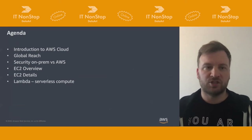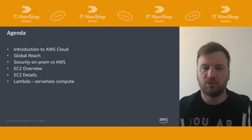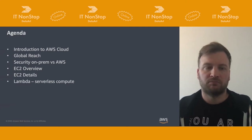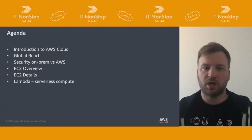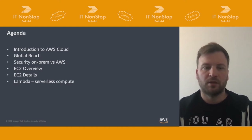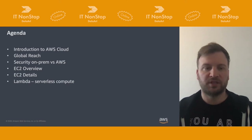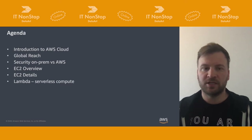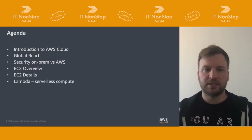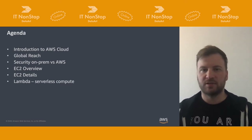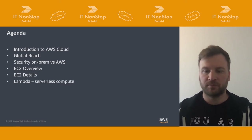Today's agenda will cover what is AWS Cloud overall, what it means from a global reach perspective, how we create our infrastructure globally, what it means from a security perspective and comparison from on-premises and AWS Cloud, and later we'll talk through the EC2 overview, some details of implementation, and Lambda as a serverless solution.